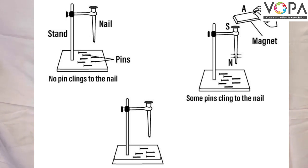What is induced magnetism? A magnetic material acquires magnetism when placed near a magnet. This magnetism is called induced magnetism.